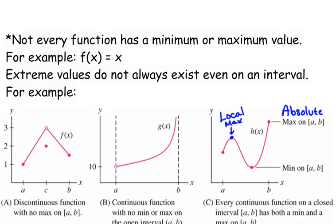The max would be F of B — whatever it is. The max is always referring to the y value. If it says 'what is the max,' then it's referring to the absolute maximum. Let's say there was a C in the interval A to B — like a local minimum. Then from A to C, if we cut it off there, the local maximum would become the absolute max on that interval.